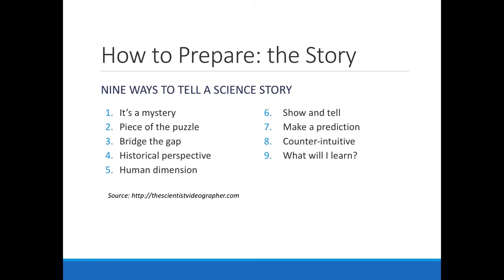The first way is presenting your information as a mystery or forensic investigation. Number two: show how your work fits into a bigger picture — your work is part of a bigger puzzle, which a lot of EPSCOR research really is. Number three: bridge the gap — explain what's known and what's not known, and how your work is trying to fill in that gap. Number four: a historical perspective — show a timeline of events or put your work into historical context. Number five: the human dimension — explain how your topic affects people or describe your personal motivation.